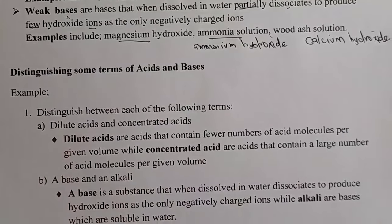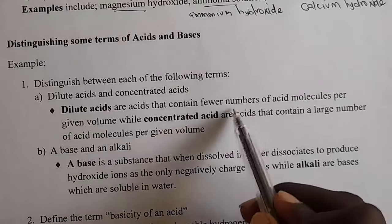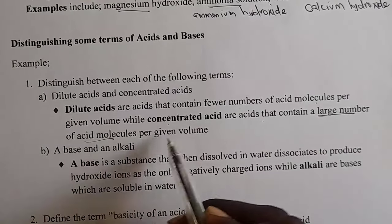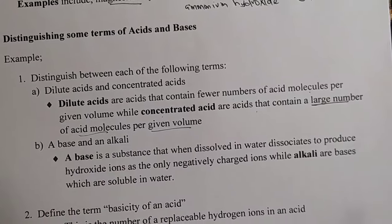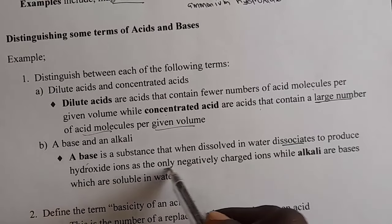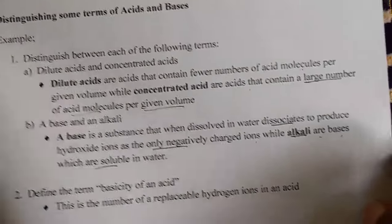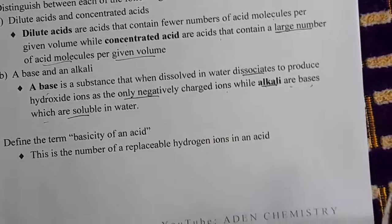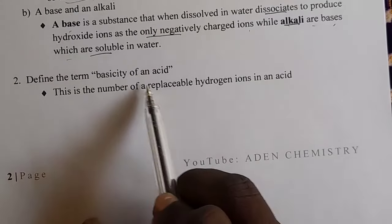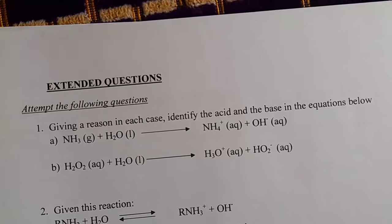Let's distinguish some terms. Dilute acids are acids that contain a small number of acid molecules per given volume. Concentrated acids are acids that contain a large number of acid molecules per given volume. A base is a substance that when dissolved in water dissociates to produce hydroxide ions as the only negatively charged ions, while alkalis are bases which are soluble in water. The basicity of an acid is the number of replaceable hydrogen ions in an acid.